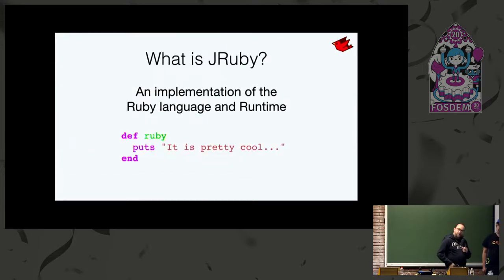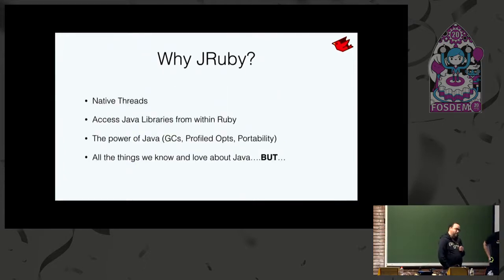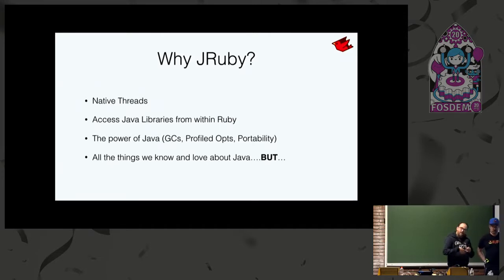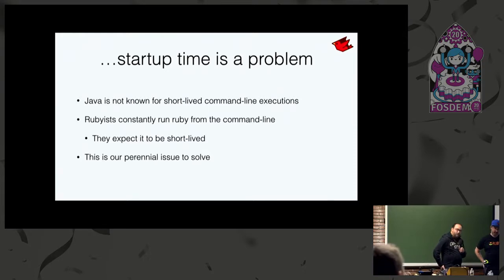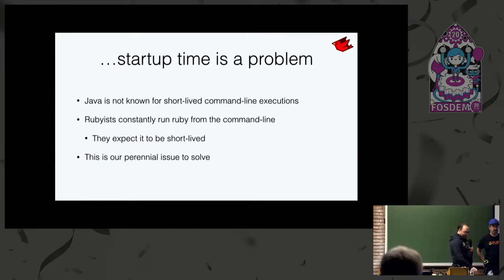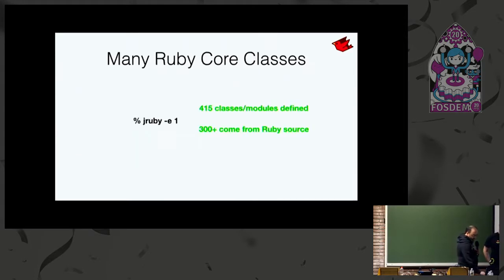JRuby is just another implementation of the Ruby programming language and runtime. We made it to exploit features that CRuby doesn't have — like the ability to execute concurrently on native threads, access Java libraries from Ruby syntax, and get all the good stuff Java provides. We run fast, but startup time is not where we'd like it — it's slower than CRuby, and developers type commands on the command line constantly.